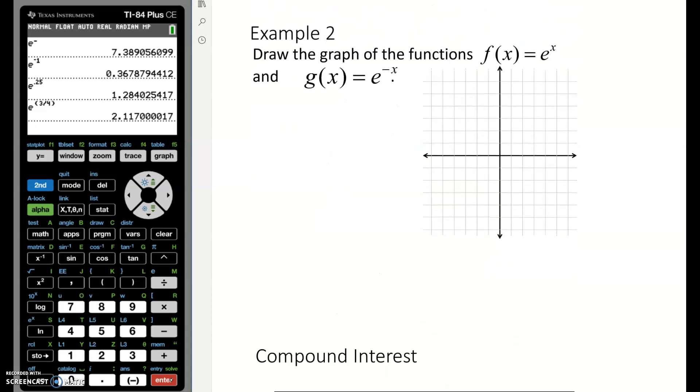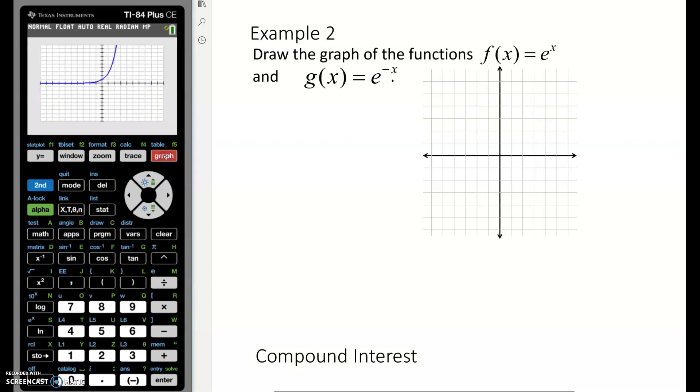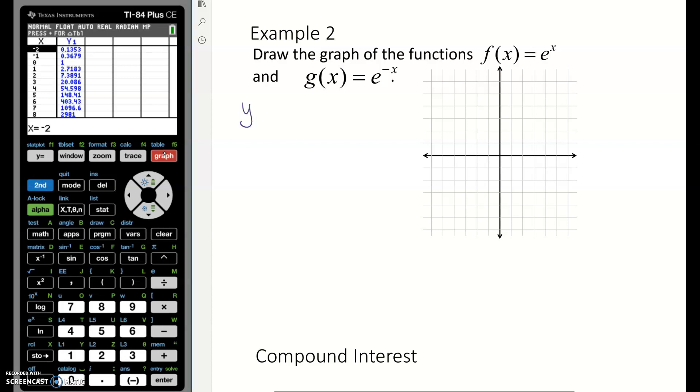Okay, we'll go through the graph of f(x) = e^x really quickly. Basically, I just want you to see that it is just like any other exponential growth or decay function. So e to the x looks like an exponential growth function. If we go into the table to get some points, so this is y equals e to the x, here's my table of values.